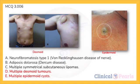Desmoid tumors and epidermoid cysts are found in Gardner syndrome, a variant of familial adenomatous polyposis. They are invariably attached to overlying skin.